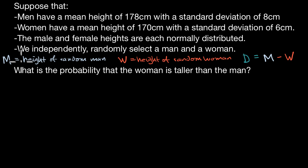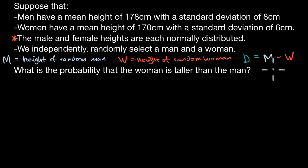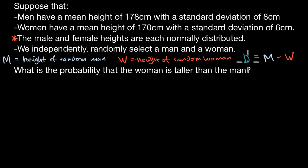The first two variables are clearly normally distributed — they tell us that right here: the male and female heights are each normally distributed. And the difference of random variables that are each normally distributed is also going to be normally distributed. So given this, can you think about how to tackle the question: what is the probability that the woman is taller than the man?